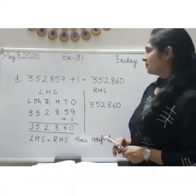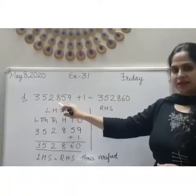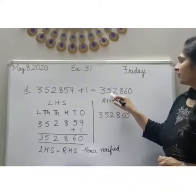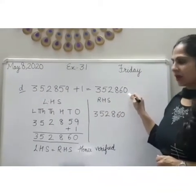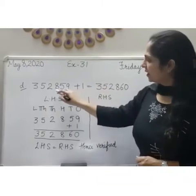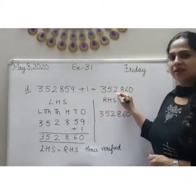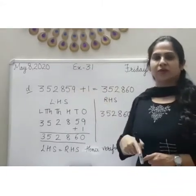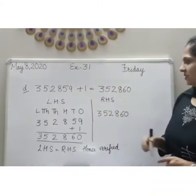Part D: 3,52,859 plus 1 is equal to 3,52,860. Here, if we add 1 to any number then it gives us the successor of that number. It is also one of the properties of addition. Now let's prove it.